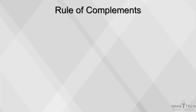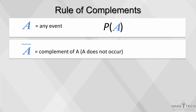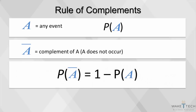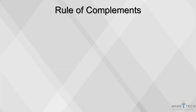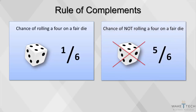The complementary rule in probability is simply the probability of an event not occurring. If a is any event, the probability of a is p(a). The complement of a is the event that a does not occur. The probability of the complement of a is 1 minus the probability of the event occurring. In our dice example, the probability of getting a 4 was 1/6, so the probability of not getting a 4 is 1 minus 1/6, which equals 5/6.